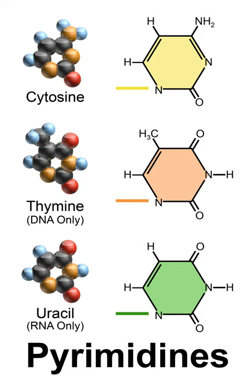The nomenclature of pyrimidines is straightforward. However, like other heterocyclics, tautomeric hydroxyl groups yield complications since they exist primarily in the cyclic amide form. For example, 2-hydroxypyrimidine is more properly named 2-pyrimidone. A partial list of trivial names of various pyrimidines exists.